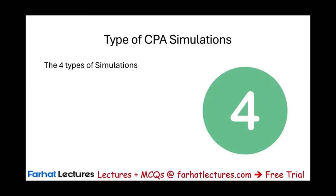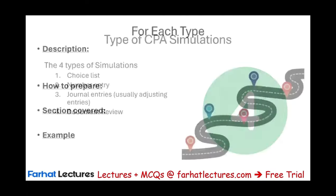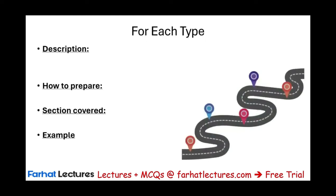The four types of simulations are: choice list, number entry, journal entries (usually adjusting entries), and document review. For each type of simulation, I'm going to go over the description, how to prepare, under which section this type most likely appears, and show you an actual example.